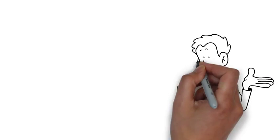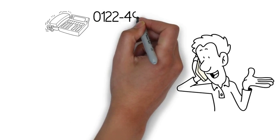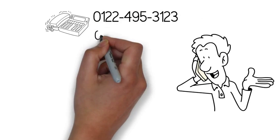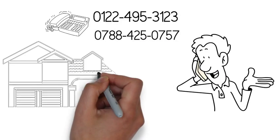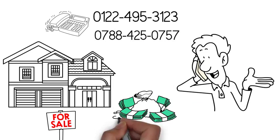Call Peter Carnegie today on 01224 953123 or 07884 250757 to find out how we can help you sell your house at the best possible price.